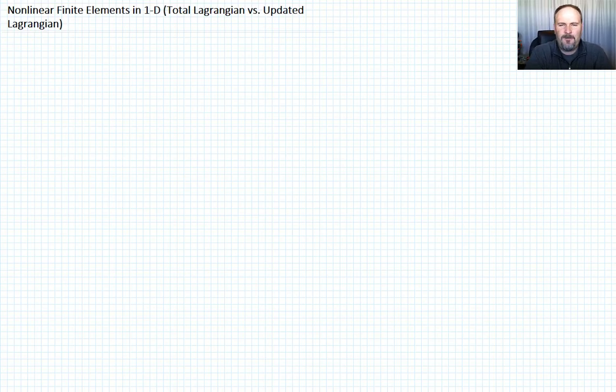Okay, in the previous lecture we developed the difference between Lagrangian and Eulerian meshes. Today I want to talk about, within the Lagrangian mesh framework, what's called a total Lagrangian and an updated Lagrangian formulation. So let me remind you what we've done.